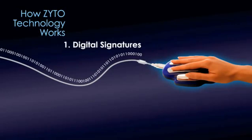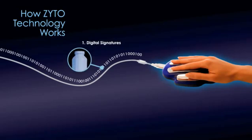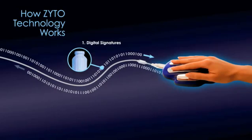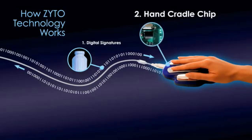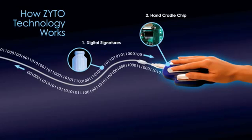Computer generated digital signatures representing physical stimuli are sent to the body. These digital stimuli elicit physiological responses from the body, one of which is a change in the conductivity of the skin called GSR. These fluctuations in skin conductivity are measured and sent back to the computer for analysis and interpretation. The hand cradle chip takes conductivity readings from the skin and converts the analog readings to a digital form, which is sent to the computer for analysis.